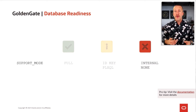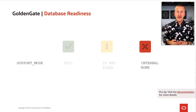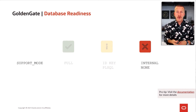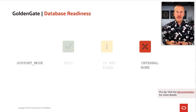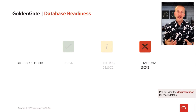In very rare cases, it will say Internal or None. If you encounter objects with that Support Mode, there is really nothing you can do — it's not supported with Golden Gate. But in most situations that is not the case. You would need a very exotic setup to find objects that are not supported in any way with Golden Gate.